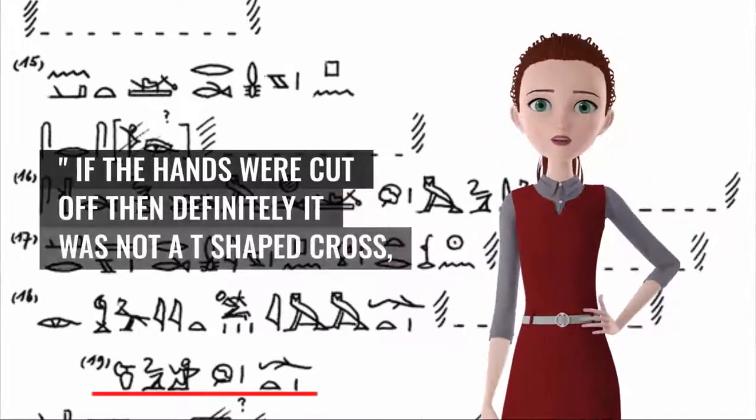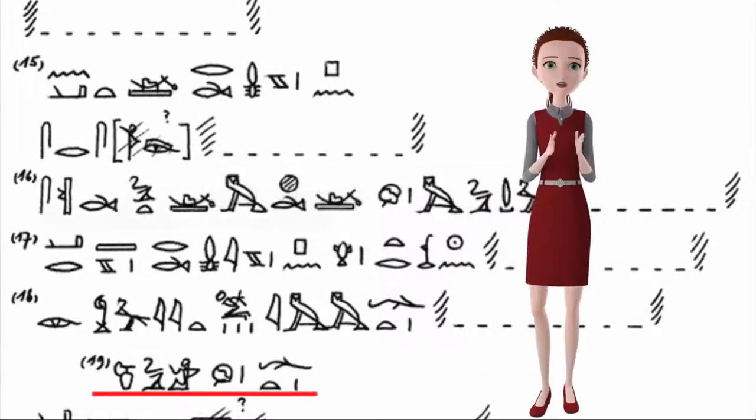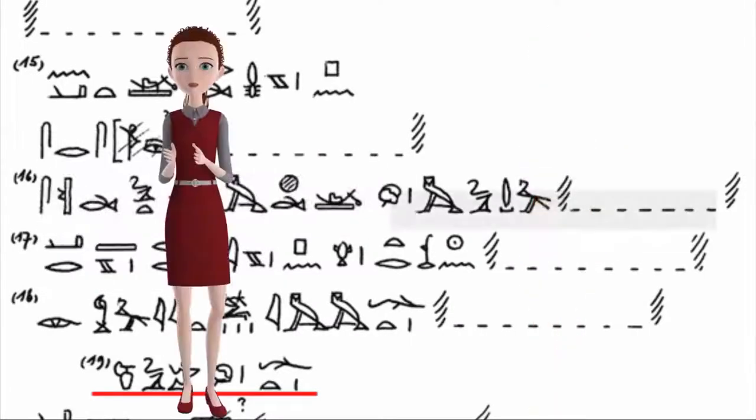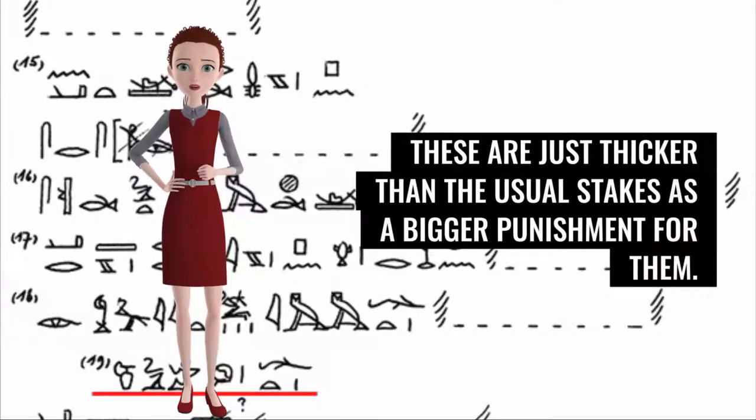If the hands were cut off, then definitely it was not a T-shaped cross. It had to be impalement on stakes. In the same verse, it says that he will crucify them on the trunks of palm trees. These are just thicker than the usual stakes as a bigger punishment for them.